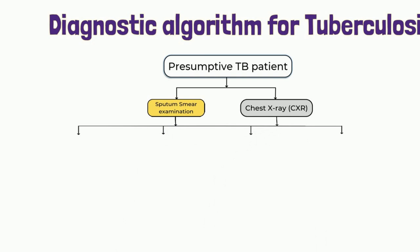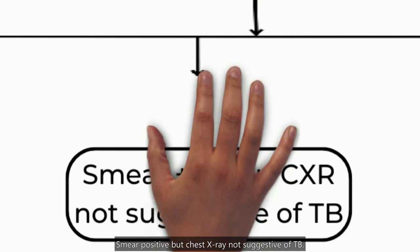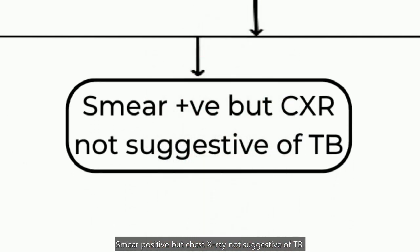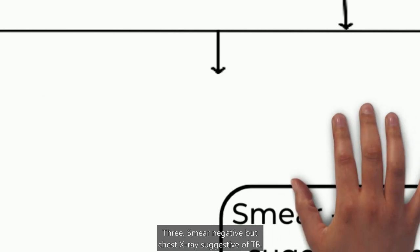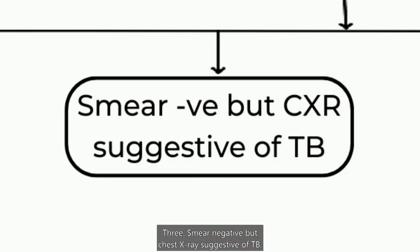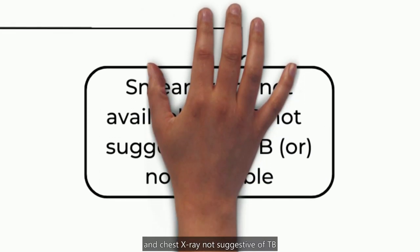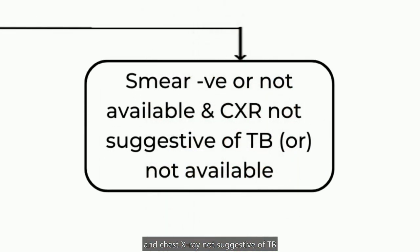The four results are: 1. Smear positive and chest X-ray suggestive of TB. 2. Smear positive but chest X-ray not suggestive of TB. 3. Smear negative but chest X-ray suggestive of TB. 4. Smear negative or not available and chest X-ray not suggestive of TB or not available.